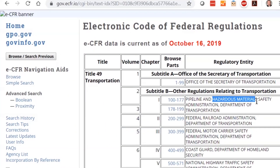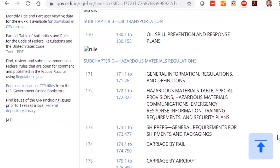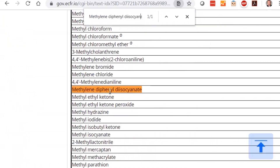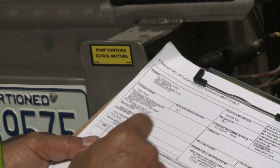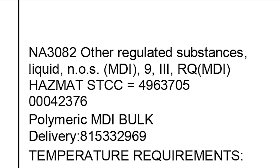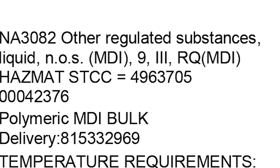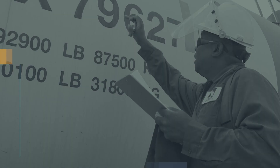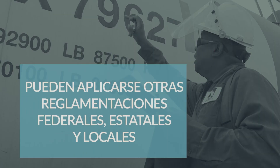Asegúrese de que los carteles de peligro sean correctos para el producto indicado en los documentos de transporte. En Estados Unidos, el Departamento de Transporte D.O.T. reglamenta el transporte del disocianato de difenilmetano 4-4' como sustancia peligrosa en envases individuales de cantidades mayores a 2,270 kilogramos o 5,000 libras. Cuando viene en esta cantidad, el MDI generalmente se clasifica como NA3082: otras sustancias reguladas, líquidas, no especificadas de otra manera, clase 9, grupo de embalaje 3. Se ingresan las letras RQ antes o después de la descripción del envío cuando los envases individuales contienen más de la cantidad informable de MDI. El almacenamiento y manipulación de MDI en su instalación pueden estar sujetos a otras reglamentaciones.